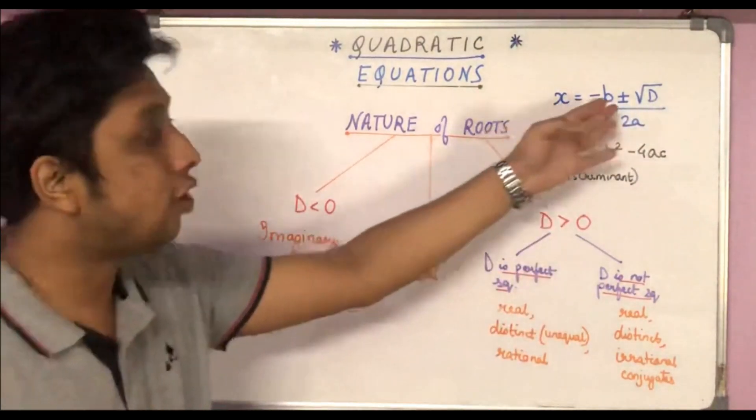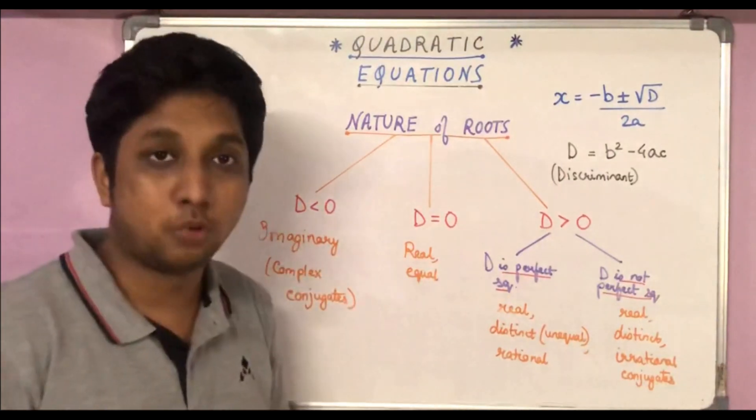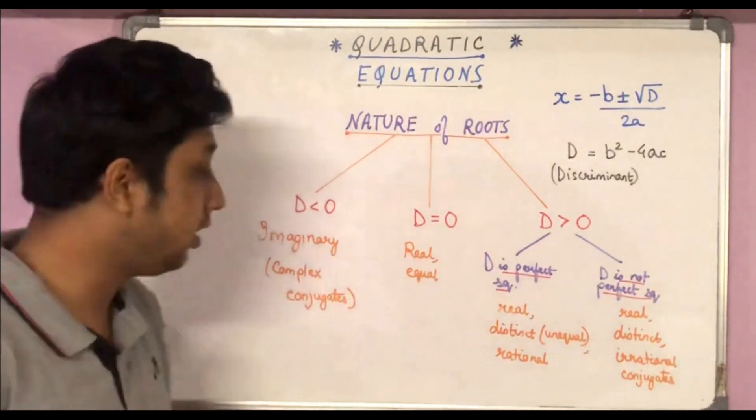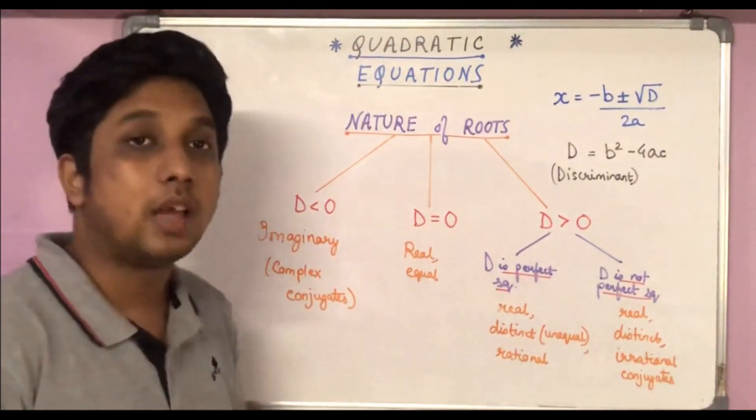The roots will not be real in that case and we can call them imaginary roots, or if we want to find them in the domain of complex numbers, we will get complex roots and they will actually be complex conjugates of each other.